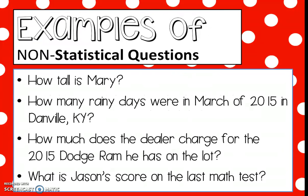Examples of non-statistical questions are questions like: How tall is Mary? Mary is 5'4" — that's one answer, not a variety of answers, therefore it's not statistical. How many rainy days were in March of 2015 in Danville, Kentucky? We could look that up and say there were 13 rainy days in March of 2015. That's one answer — not statistical.